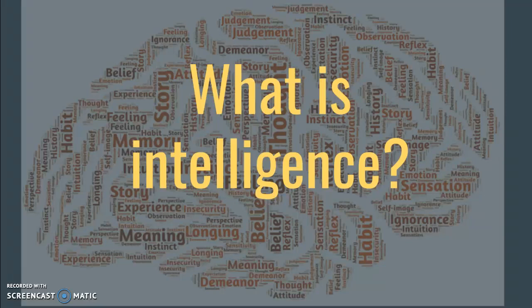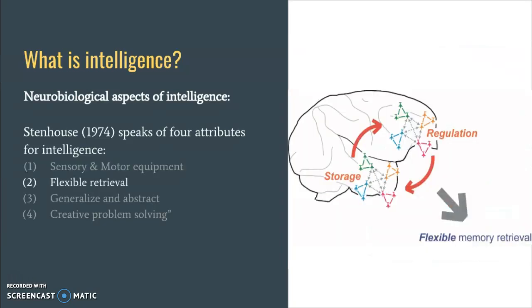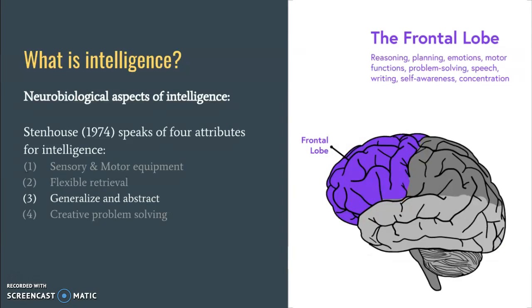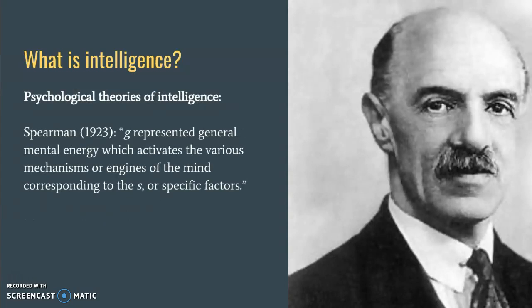So what is intelligence? Take a moment to reflect on what you believe intelligence is — feel free to pause the video. In terms of neurobiology, Stenhouse speaks of four attributes: sensory and motor equipment, flexible retrieval, generalization, and abstraction, which all lead to creative problem solving.